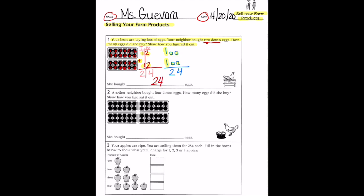So I write the number 24 on the line because this is how many eggs my neighbor bought. You're going to do the next one by yourself. This time another neighbor bought four dozen eggs. How can you find the answer?